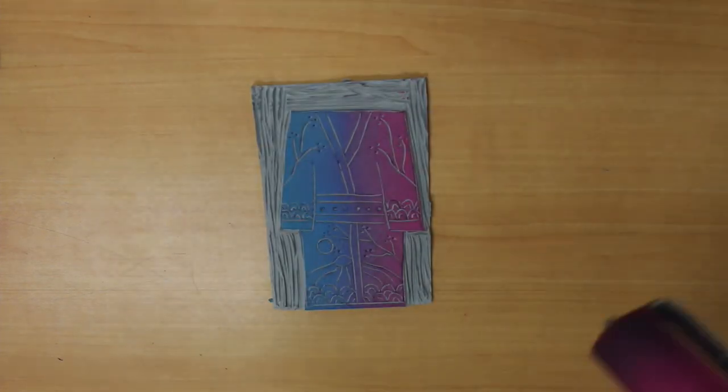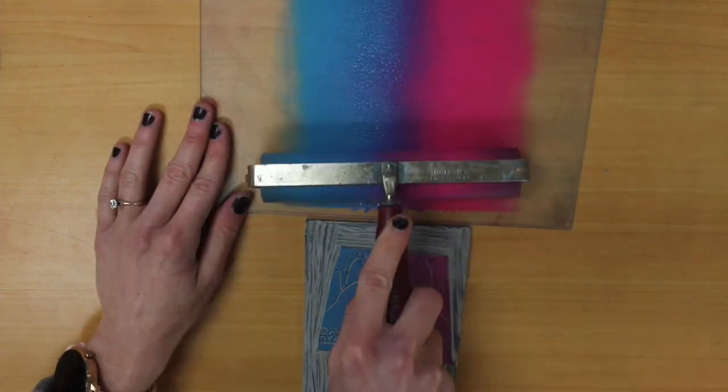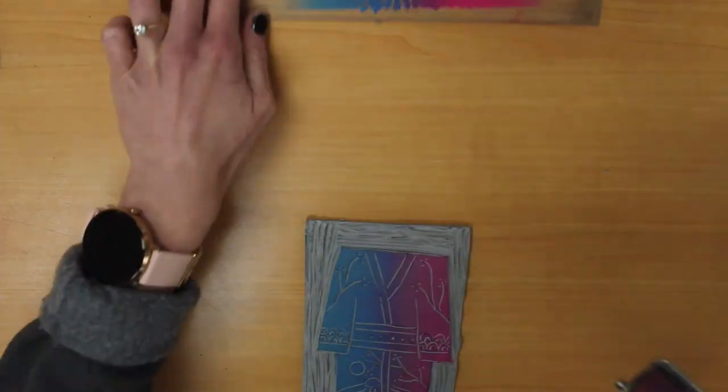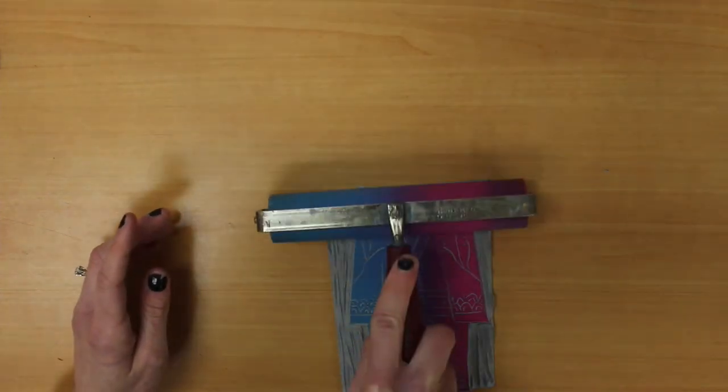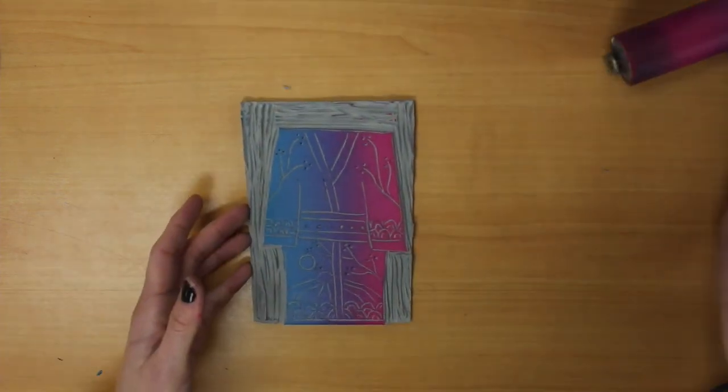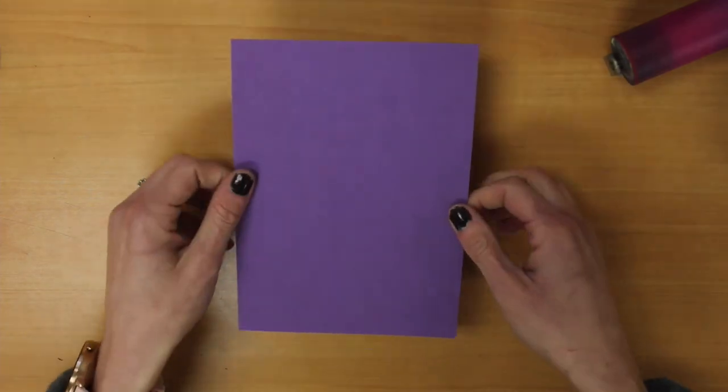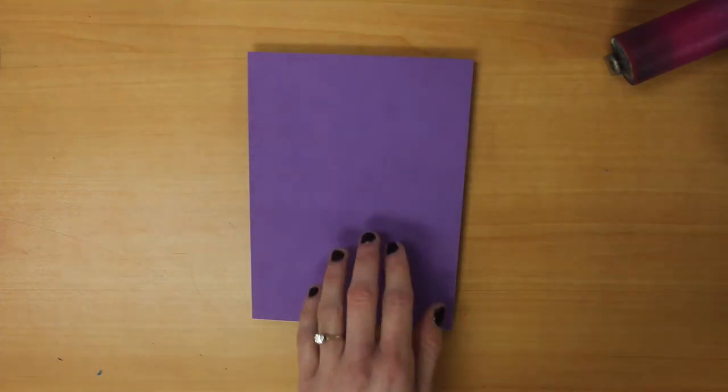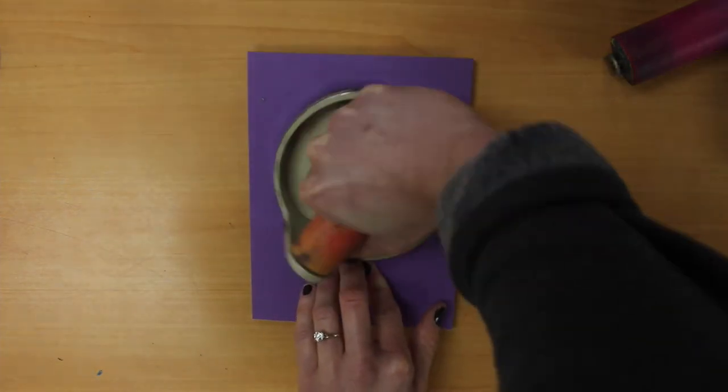So artists, I want you to keep going. Keep repeating this process. Ink up with your brayer. Take your paper. Put it on your block. Use your barren to transfer that ink from your block to your paper. And I would say keep going until you have a good amount of options, color options.